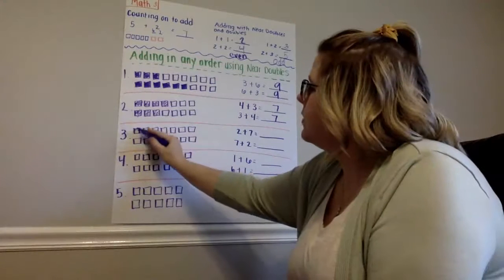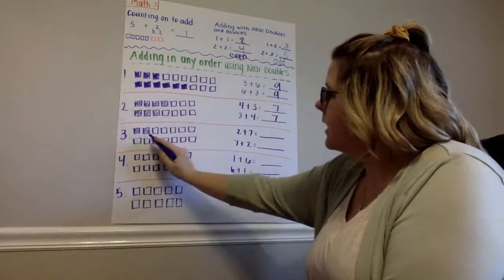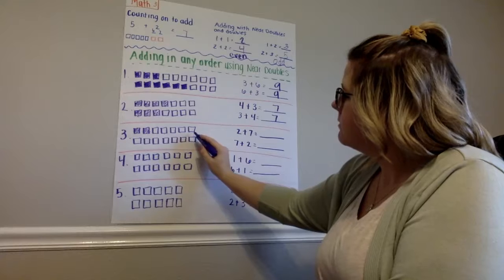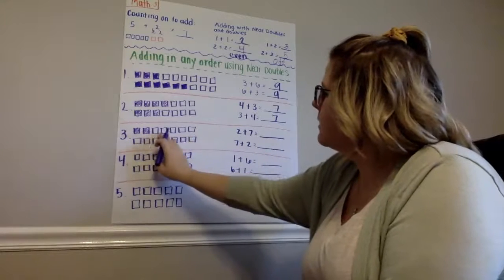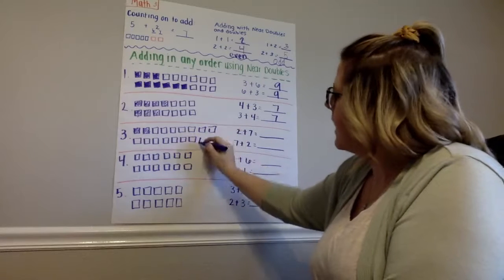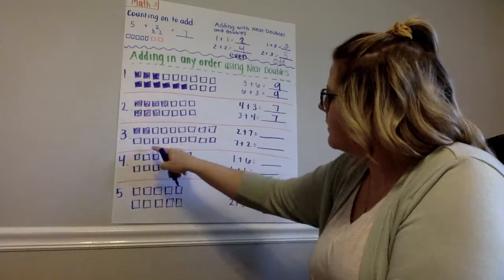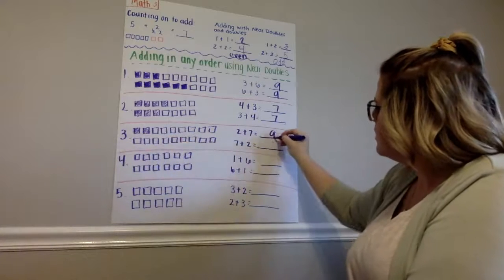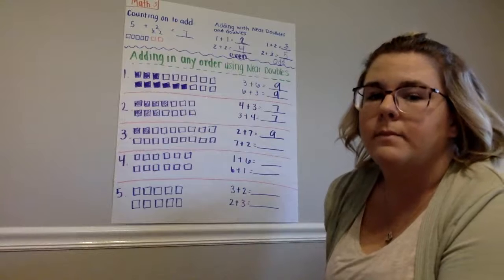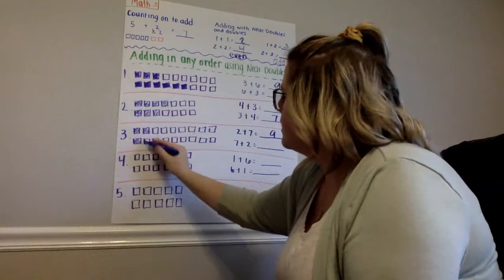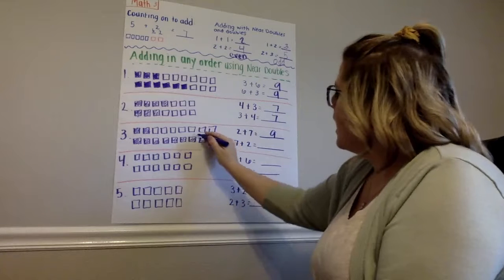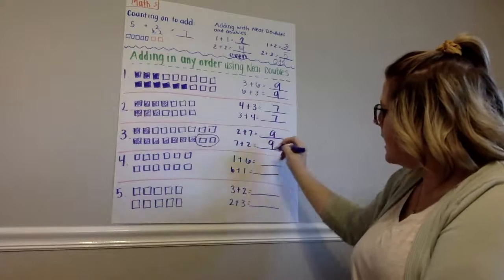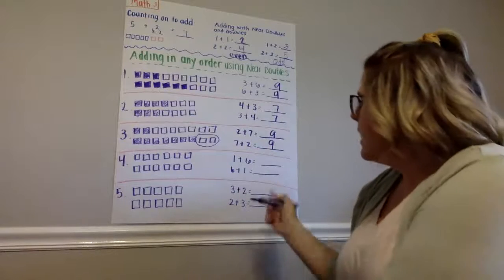Next one. 2 plus 7. So, I colored in 2. And I'm going to count on 3, 4, 5, 6, 7. Oh, wait. Sorry. I did not add enough cubes. So, 1, 2, 3, 4, 5, 6, 7, 8, 9. 2 plus 7 equals 9. Now, I'm going to color in 7. How many do I have left? 2. So, 7, 8, 9. I can add it in any way. It doesn't matter.